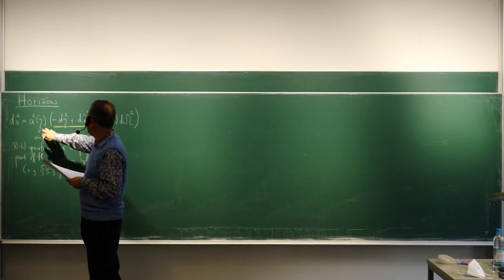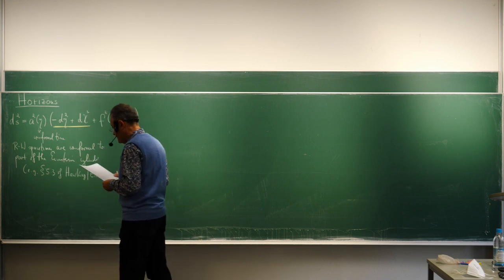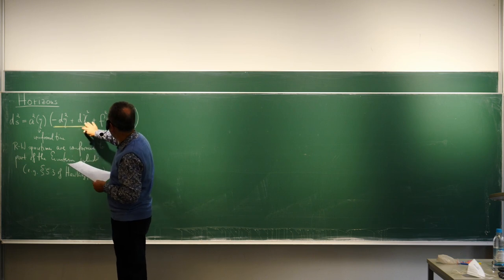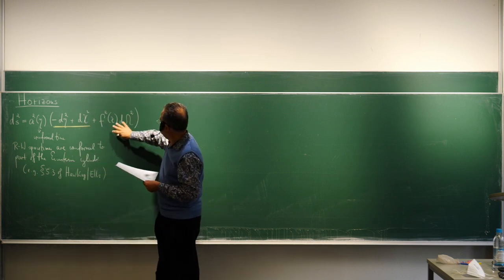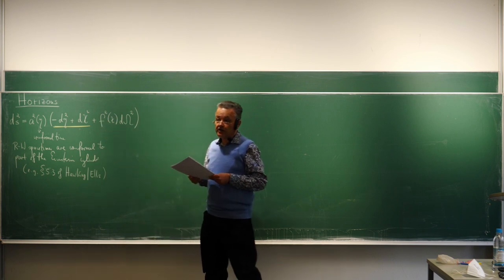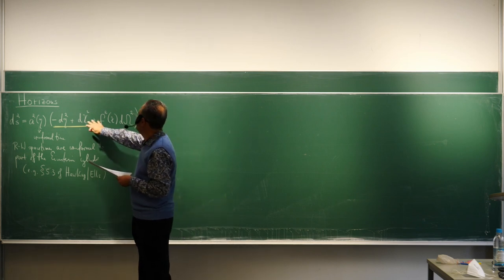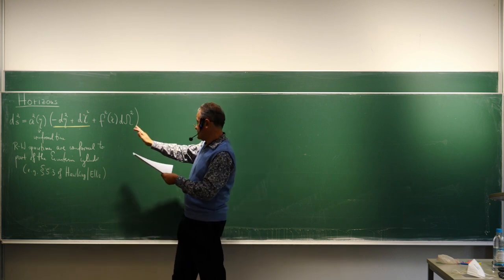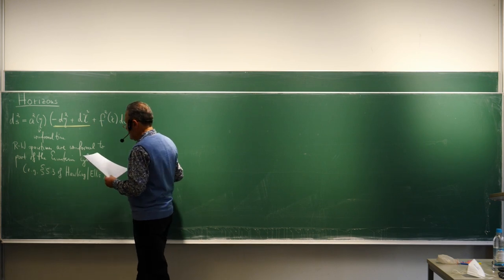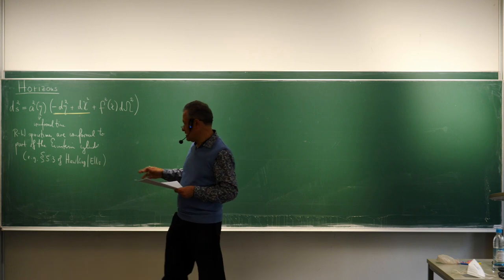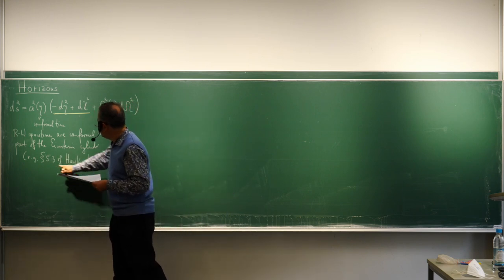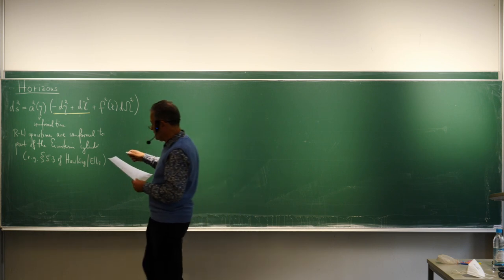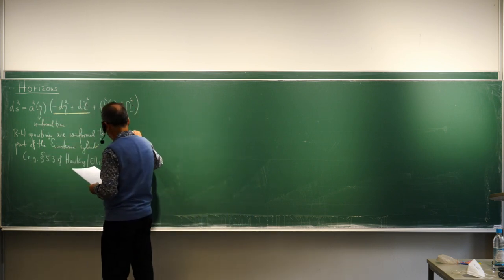When we study causal structure, conformal time eta is useful. Here I wrote down the Robertson-Walker line element in this conformal time with the angle chi. This factor F-squared depends on whether you have an open, closed, or flat universe. Typically we will deal with radial light rays, so we adapt the coordinate such that this part is zero. As already mentioned in the relativity class, and as discussed in detail in Hawking and Ellis, these Robertson-Walker spacetimes are conformal to part of what is called the Einstein cylinder.